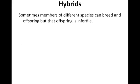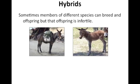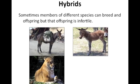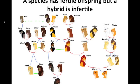The definition of a species can be complicated by hybrids. Hybrids are generally formed when two different species breed and have offspring, however that offspring is infertile. Examples include mules, which are the offspring of a male donkey and a female horse; zedonks, the offspring of zebras and donkeys; ligers, made from tigers and lions; and grolar bears, from grizzly bears and polar bears. In summary, a species has fertile offspring, but a hybrid is infertile.